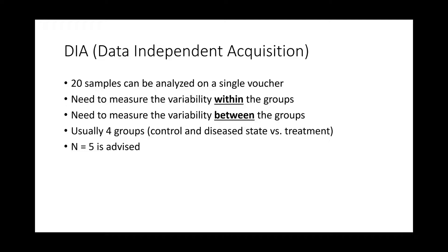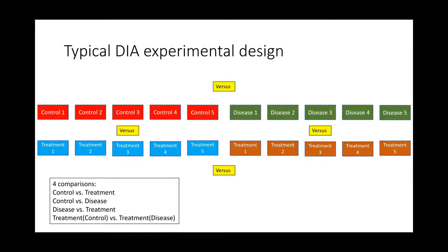For DIA, or data-independent acquisition, the sample size can be 20 or more — though it can be less, larger sample sizes are typical. We still need to measure variability within the group to measure variability between the groups. If you had 20 samples in our proteomic voucher program, you could divide them into four different groups — for instance, a control and a disease versus a treatment — still maintaining an n equals five. A typical DIA experimental design for 20 samples might have five samples of a normal cell type as control, and that same cell type in a diseased state due to a knocked-out gene or mutation.